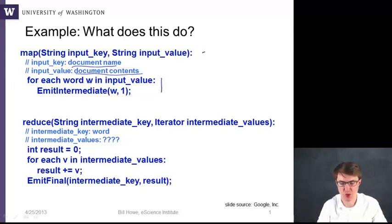It says, well, for each word w in the input value—so this sort of assumes that somehow you can iterate over all the words in the input value, in the text of the document, without really specifying how—then emit a key-value pair where the key is this first element, which is the word, and the value is the number one.